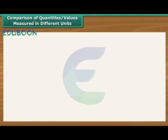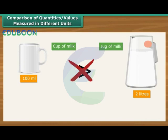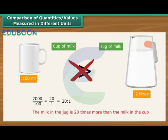Comparison of quantities and values measured in different units. Vinita has 100 milliliters of milk in a cup and 2 liters of milk in a jug. Can we say that the quantity of milk in the cup is greater than in the jug? No. The two quantities are measured in different units and hence cannot be compared. We should express them both in the same units. Express 2 liters as 2000 milliliters. Now the quantities are comparable. 2000 by 100 is the same as 20 by 1, or 20 is to 1. Therefore, the milk in the jug is 20 times more than the milk in the cup.